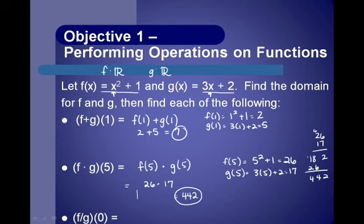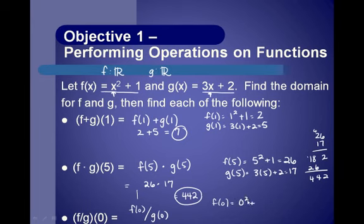Then f divided by g of 0 means f of 0 divided by g of 0. f of 0 is found by substituting 0 for x: 0 squared plus 1 equals 1. g of 0 is 3 times 0 plus 2, which is 2. So f of 0 divided by g of 0 is 1 over 2, or one-half.